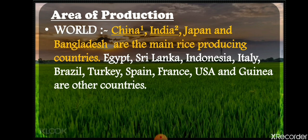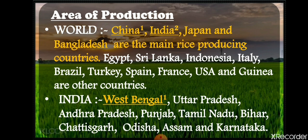For area of production worldwide, China is the leading producer of rice. India is the second largest producer, followed by Japan and Bangladesh. Other producers include Egypt, Sri Lanka, Indonesia, Italy, Brazil, Turkey, Spain, France, and USA. In India, West Bengal is the leading producer of rice, followed by Uttar Pradesh, Andhra Pradesh, Punjab, Tamil Nadu, Bihar, Chhattisgarh, Odisha, Assam, and Karnataka.